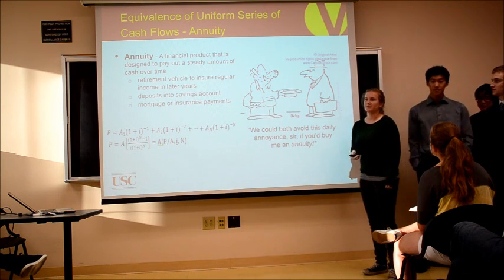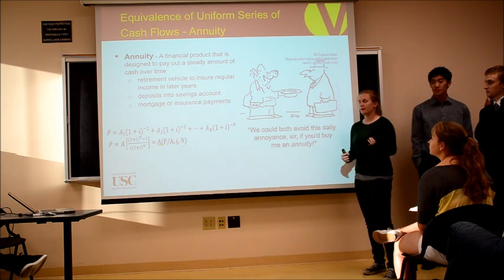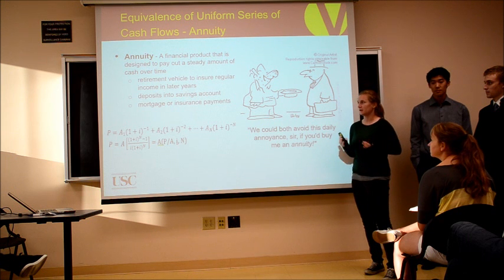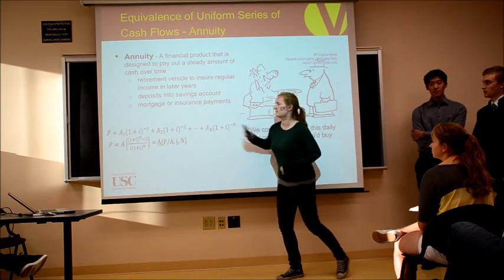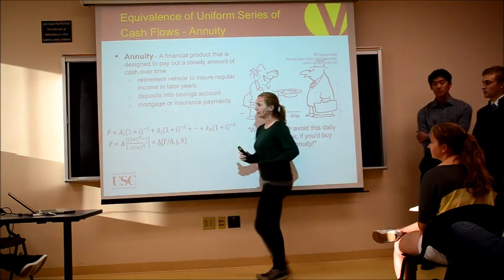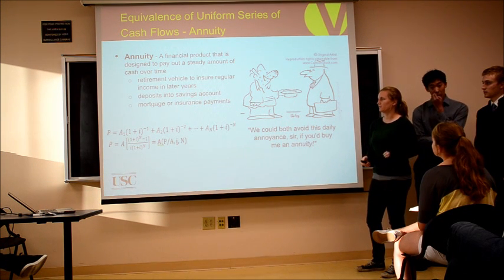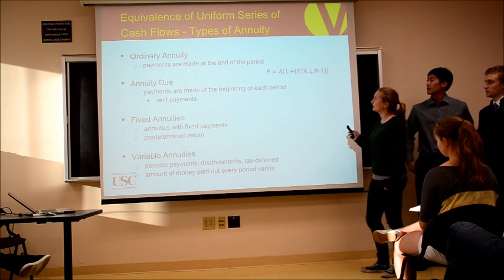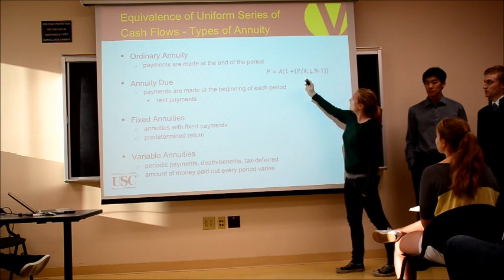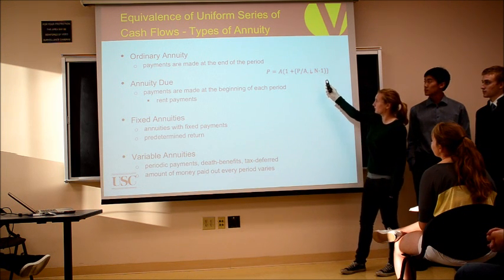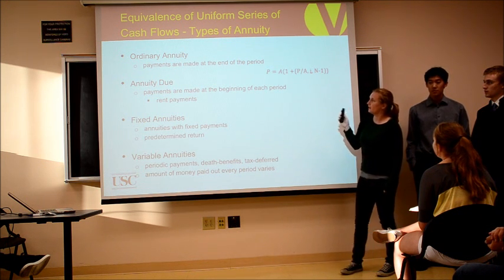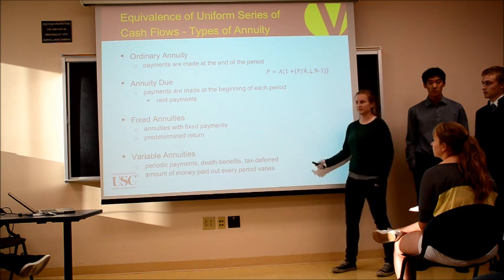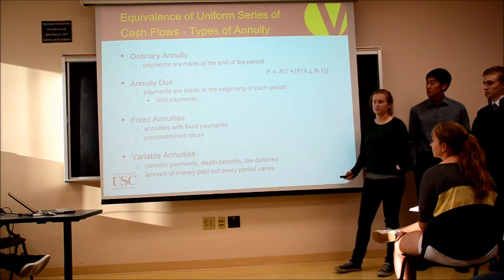So what are annuities? Basically, they are a financial product designed to pay out a steady amount of cash over time — more like a car payment or depositing into a savings account, such as $200 every month, to increase your value at the end of a certain period. Here are the equations from our textbook, including the series present worth, used to find the equivalent present value. There are different types: ordinary annuity, where payment is made at the end of the period, using the formula with A as the annuity value, P as the present value, N as number of periods, and I as percent interest. There is also annuity due, where payments are made at the beginning of each period, like rent payments, and fixed annuities with fixed payments and a predetermined return from the bank or insurance company.